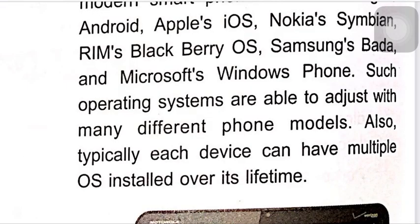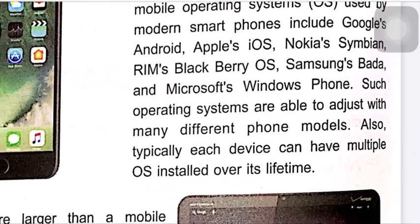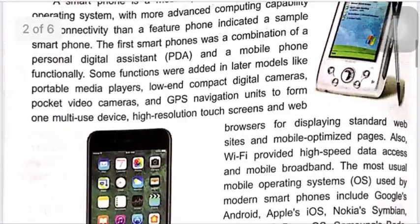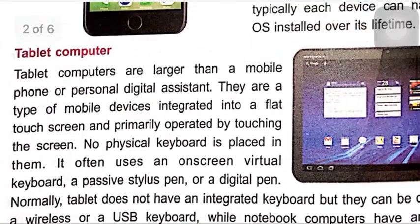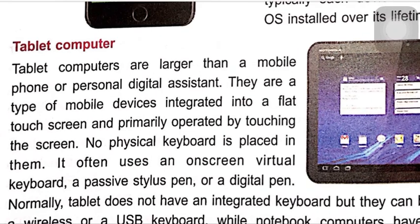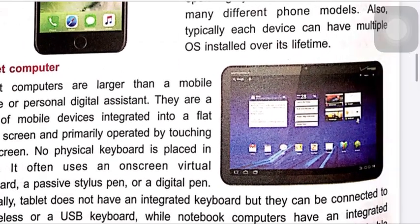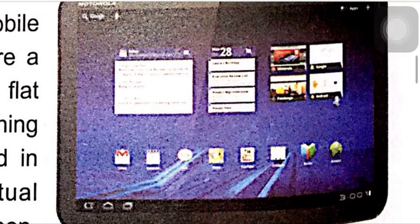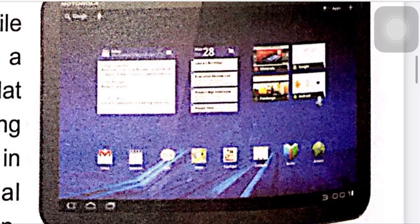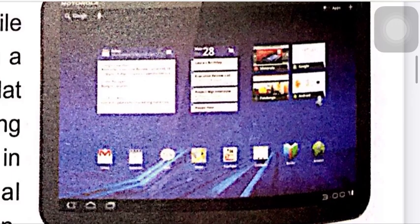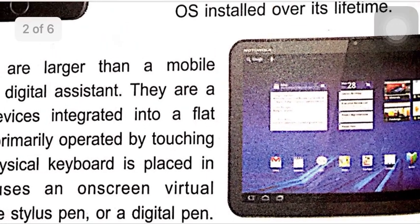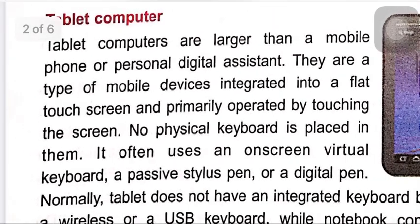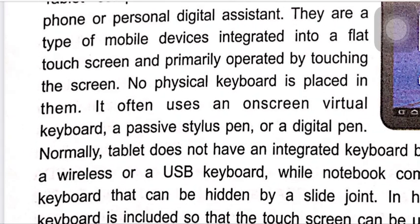Now we come to tablet computers. Tablet computers are larger than a mobile phone or personal digital assistant. There are generally two types: with SIM and without SIM, the latter working only on Wi-Fi. They are a type of mobile device integrated into a flat touchscreen, primarily operated by touching the screen, with no physical keyboard.